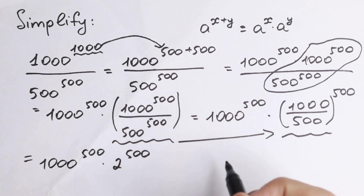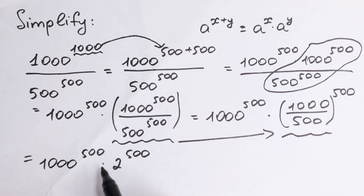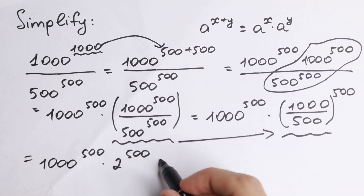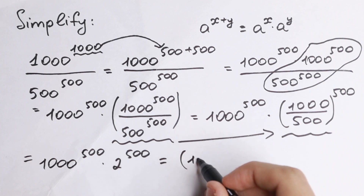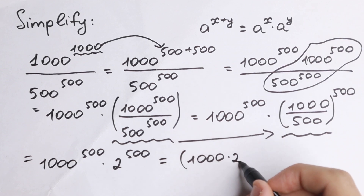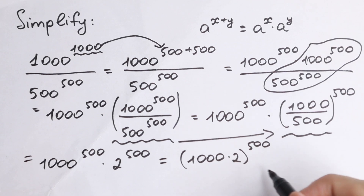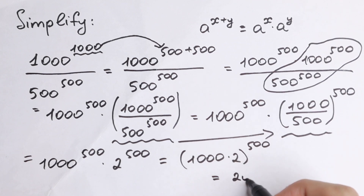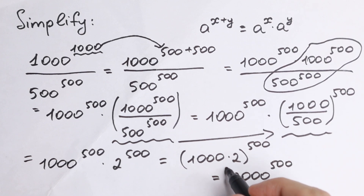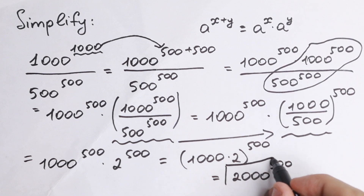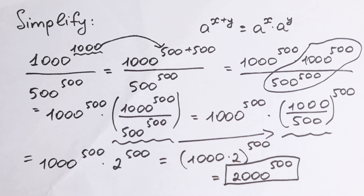Right now we can easily use the next rule: we have the same exponent, so we can multiply our bases. So 2 times 2 to the power of 500 equals 2000 to the power of 500. And this is our answer.